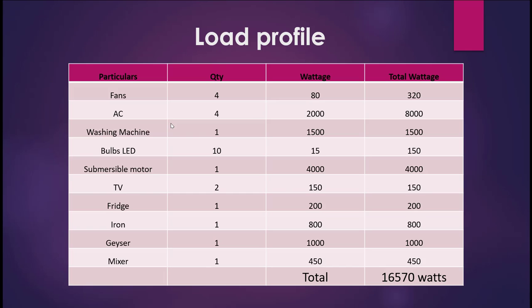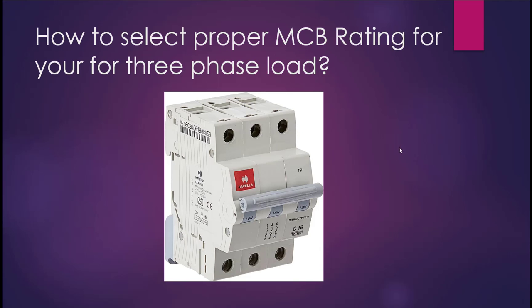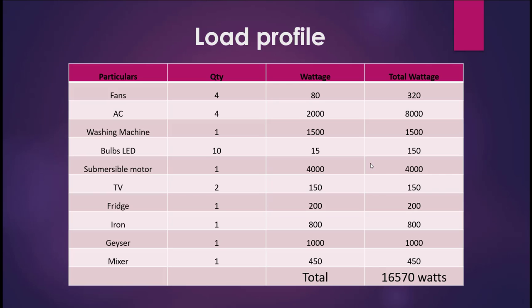For example, take a load profile: you have fans, AC, washing machine, bulbs, and a submersible motor, TV, fridge, iron, geyser, mixer, etc. Each equipment has a wattage value. AC is taking 2000 watts, fans 80 watts, bulbs 15 watts, and the submersible pump is around 5 HP — which when converted to kilowatts is approximately 3.73, so for calculation purposes I took 4 kilowatts. The total wattage comes to 16,570 watts.